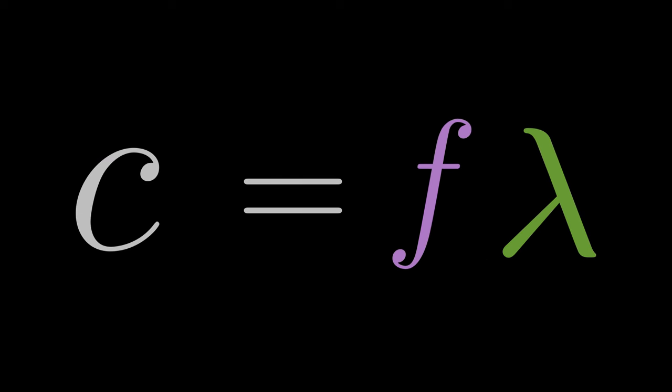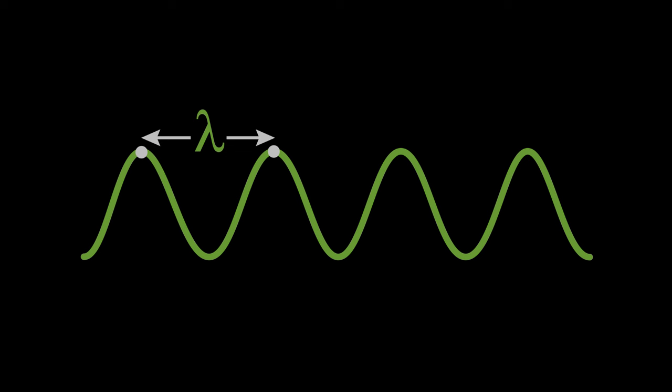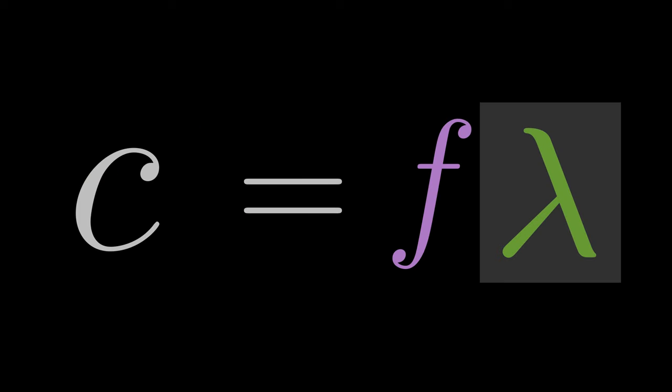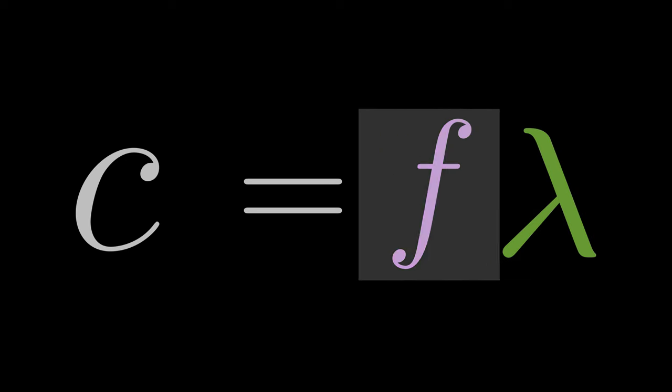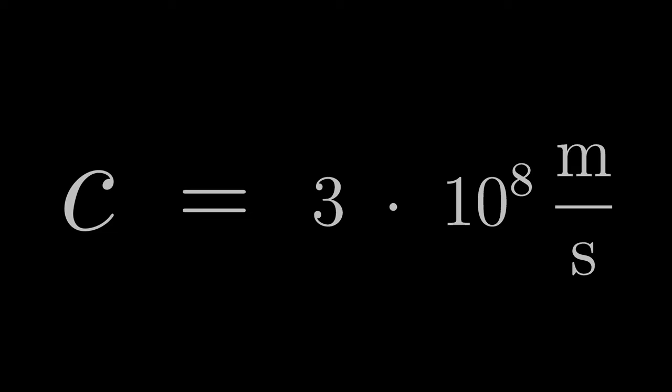C is equal to F times lambda. This formula is known as the dispersion relation of light. The wavelength is the distance between two wave crests of the light in the wave model of light, and the unit of wavelength is the meter. The speed of light is a physical constant and has the value 3 times 10 to the power of 8 meters per second.